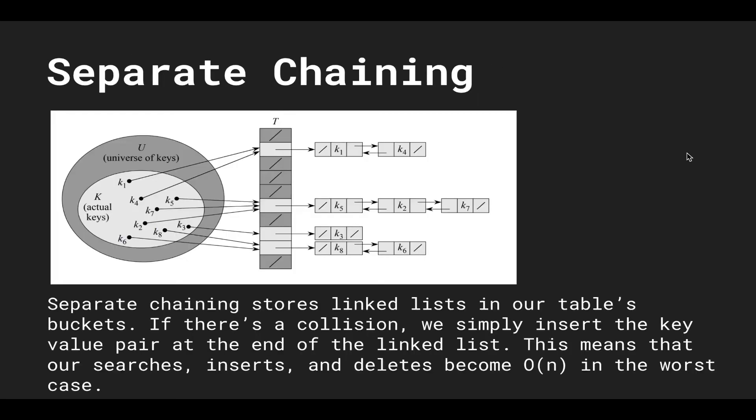Separate chaining stores linked lists in our table's buckets. So if there's a collision we simply insert the key value pair at the end of the linked list. This means that our searches and insertions and deletions become O of n in the worst case.